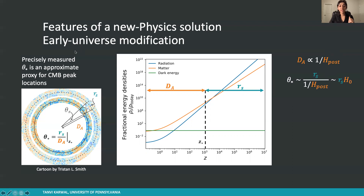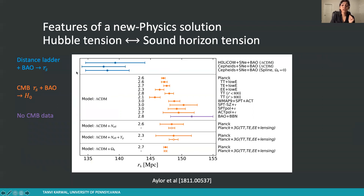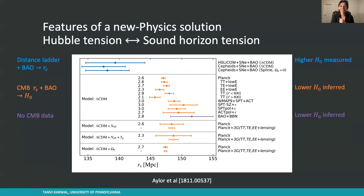Knowing that we need to keep theta star constant — which is a very precise measurement — we find that our sound horizon and our Hubble expansion rate are inversely proportional. This is echoed by data. If you try and measure the sound horizon using late universe measurements versus early universe measurements, you again see the same disconnect that you see with the Hubble tension — exactly the flipped disconnect. Where we have a higher Hubble parameter measured, we have a lower sound horizon measured. So you can actually recast the Hubble tension into a tension in measurements of the sound horizon.